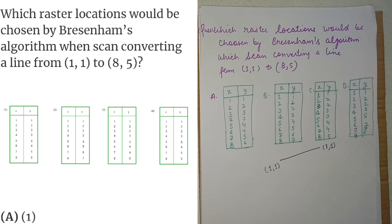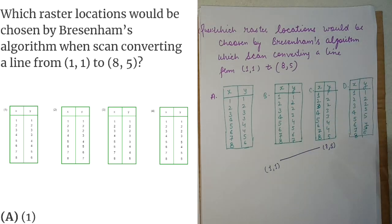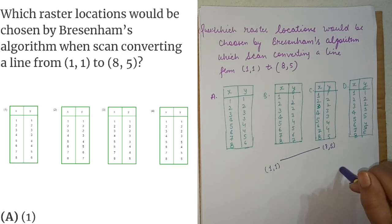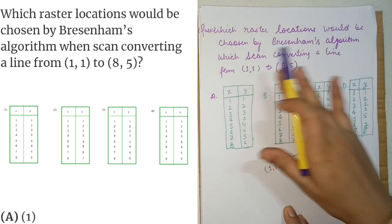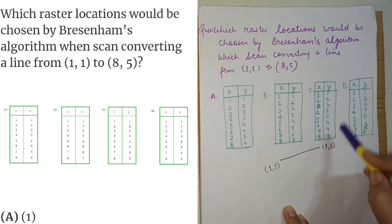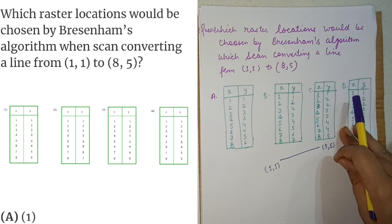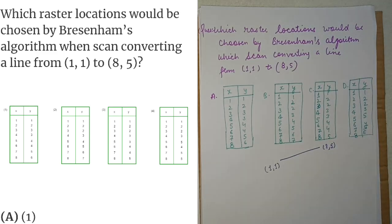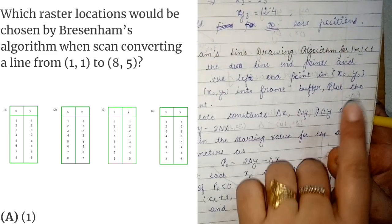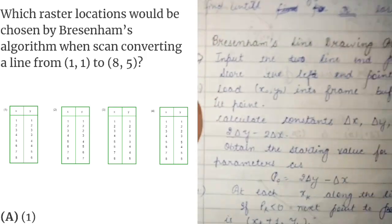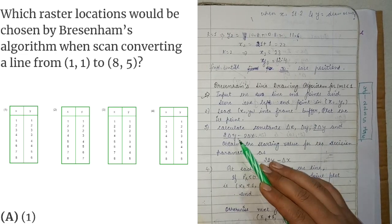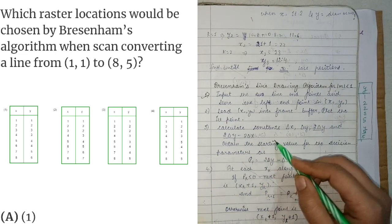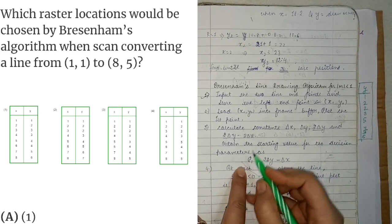First of all, let's look at Bresenham's line algorithm. The algorithm can help you solve it, but at the end you have a question in a paper or exam, so I will tell you the trick in a second. First of all, we have the algorithm — we need to know the ending and starting points, then we calculate delta x, delta y, 2*delta y, and 2*delta y minus 2*delta x.